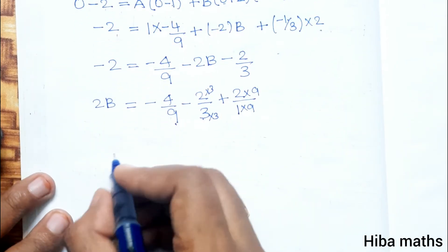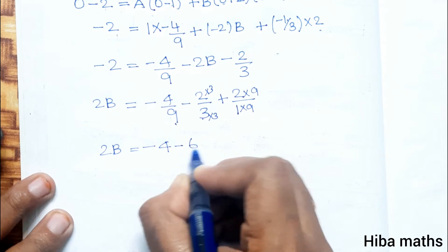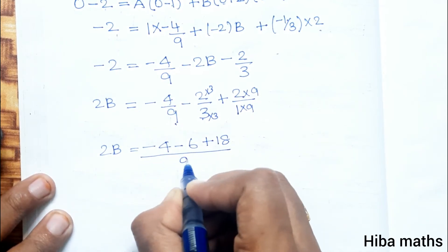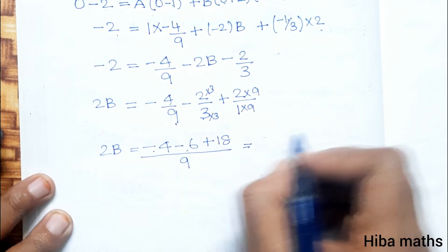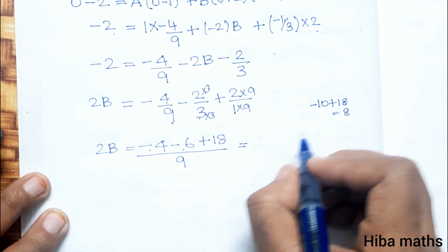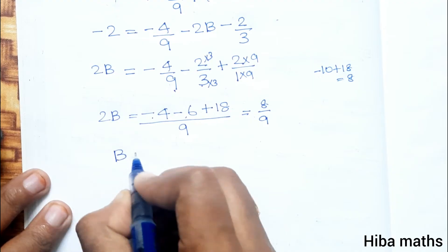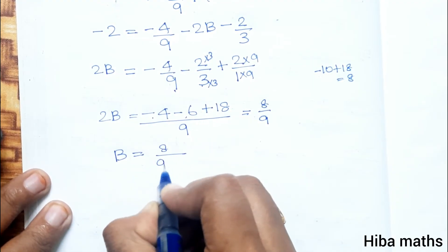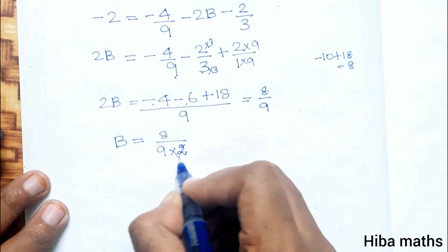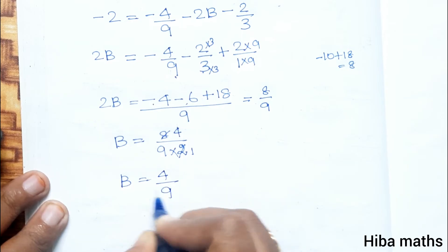Simplifying: minus 4 minus 6 equals minus 10, plus 18 over 9. Solving gives 8 by 9 equals 2b, so b equals 4 by 9. We now have all three values: A equals minus 4 by 9, B equals 4 by 9, C equals minus 1 by 3.